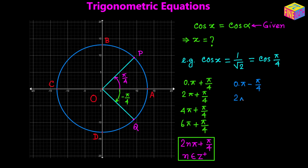That is essentially 2pi minus pi over 4. Rotating one more full circle counterclockwise gives 4pi minus pi over 4. Similarly, rotating one more time counterclockwise gives 6pi minus pi over 4.